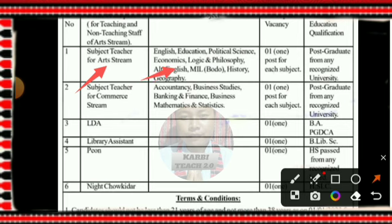The Arts stream subjects include political science, economics, philosophy, and alternative English. MIL, BODO, HISTORY, and related subjects are also listed for the post graduate qualification.